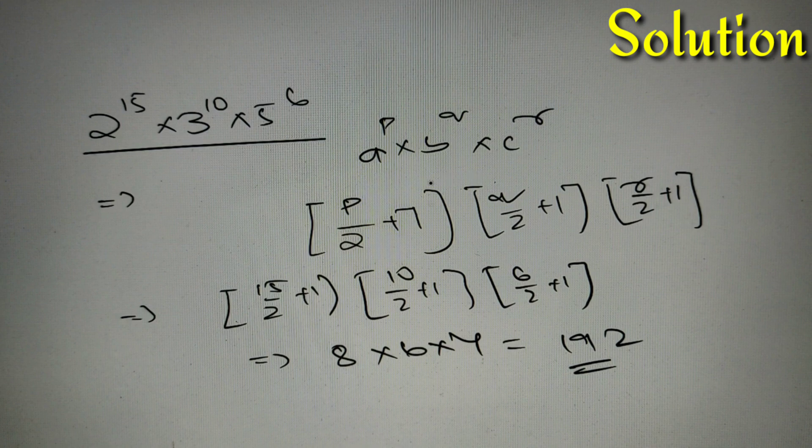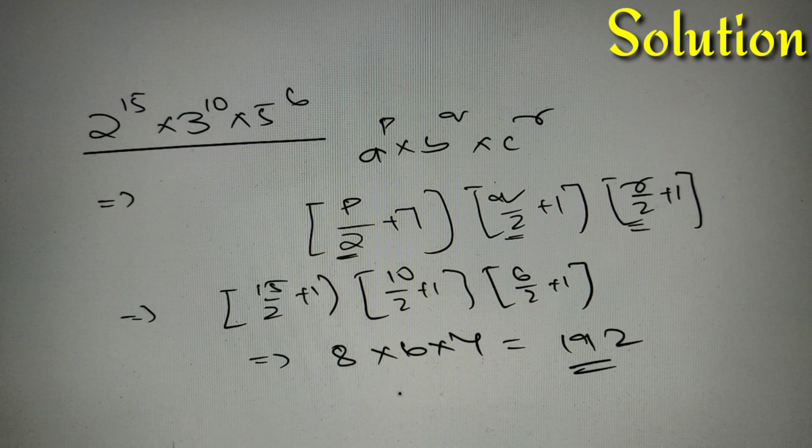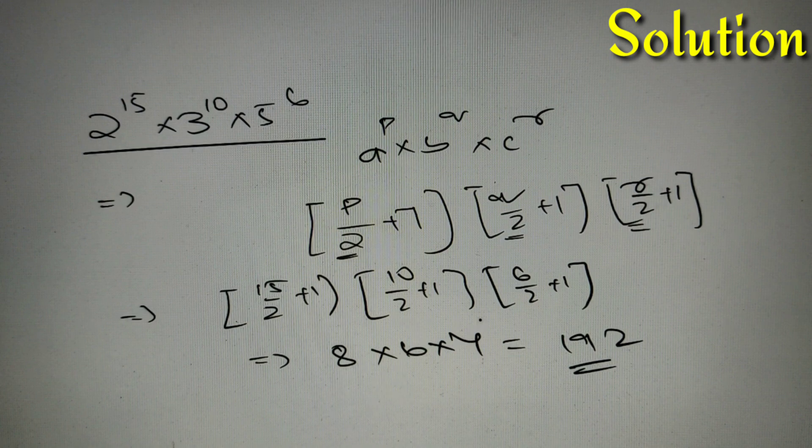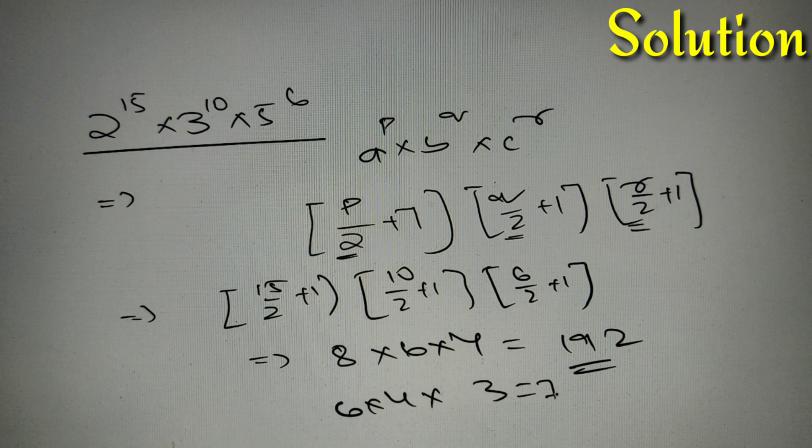Now in the case of perfect cube, instead of 2 we'll just write 3. So we'll have 15 by 3 plus 1, into 10 by 3 plus 1, into 6 by 3 plus 1 in the greatest integer function. From that we'll get 6 into 4 into 3, which is equal to 72.